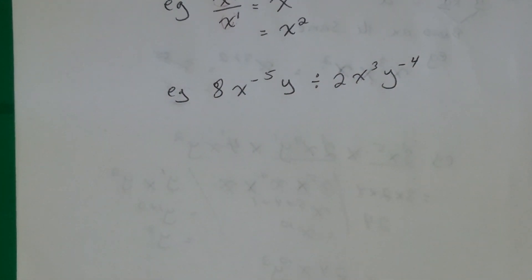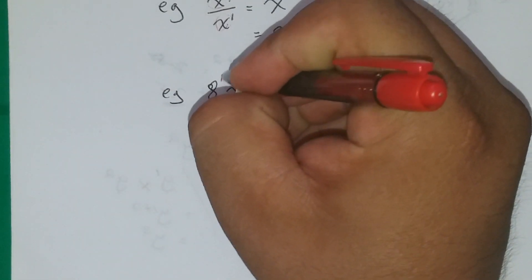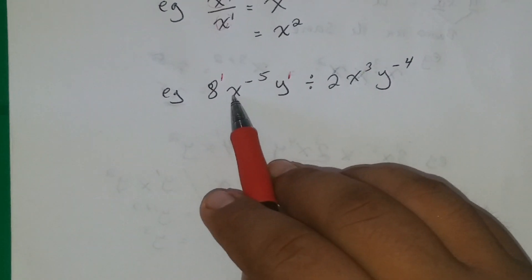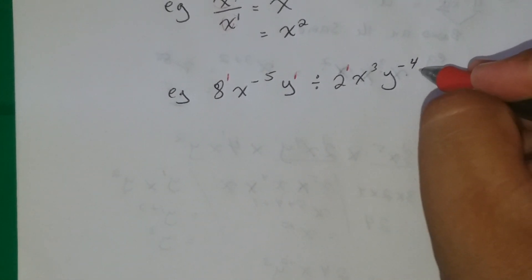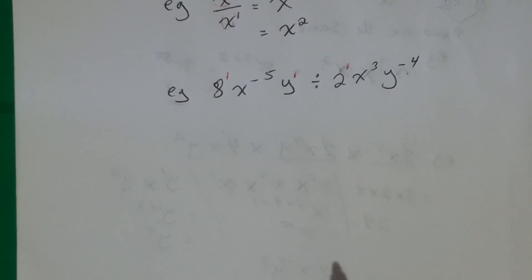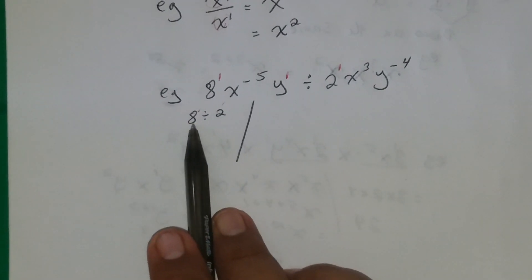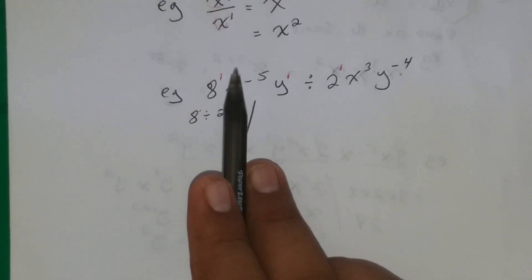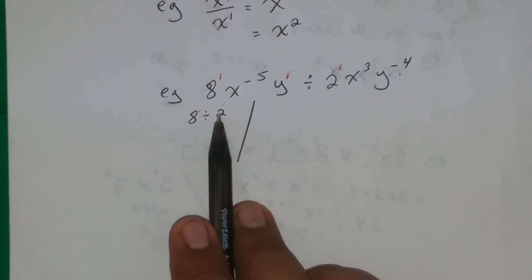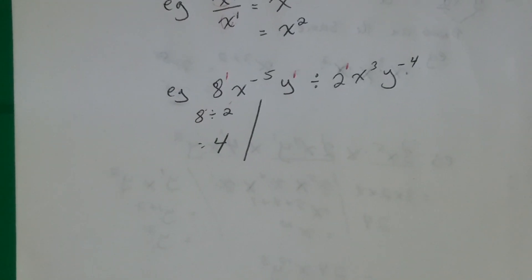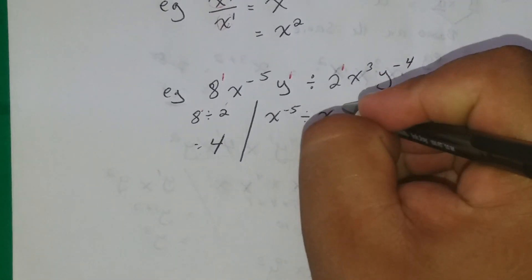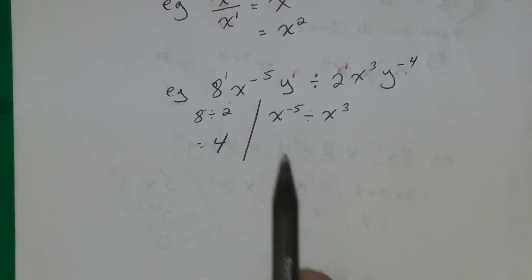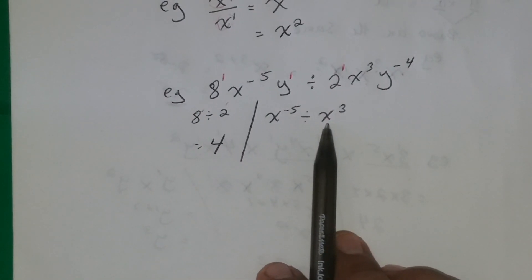Let's add in the implied ones: y will have a power of one, x is to the third, y is to the negative four. Now look at the numbers: 8 divided by 2. Are the bases the same? No — 8 and 2 are different bases, so we cannot apply the law of indices. We just divide: 8 divided by 2 equals 4. Now for x: x to the negative five divided by x to the third — the bases are both x, so we can apply the law.